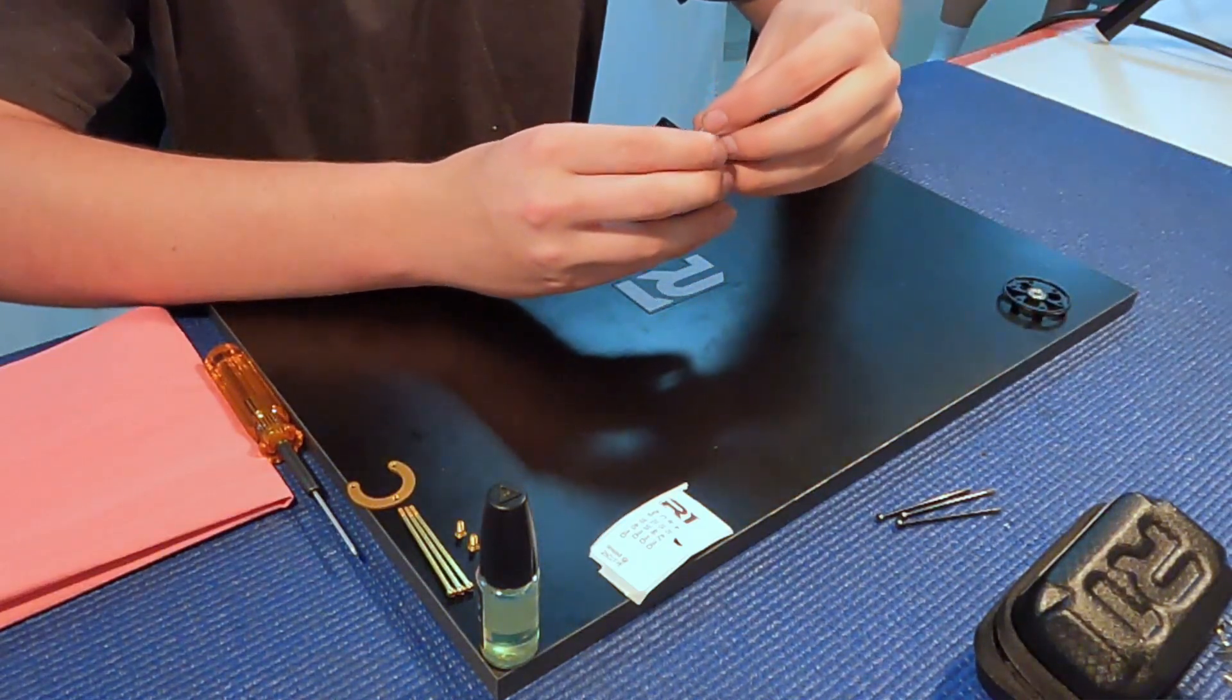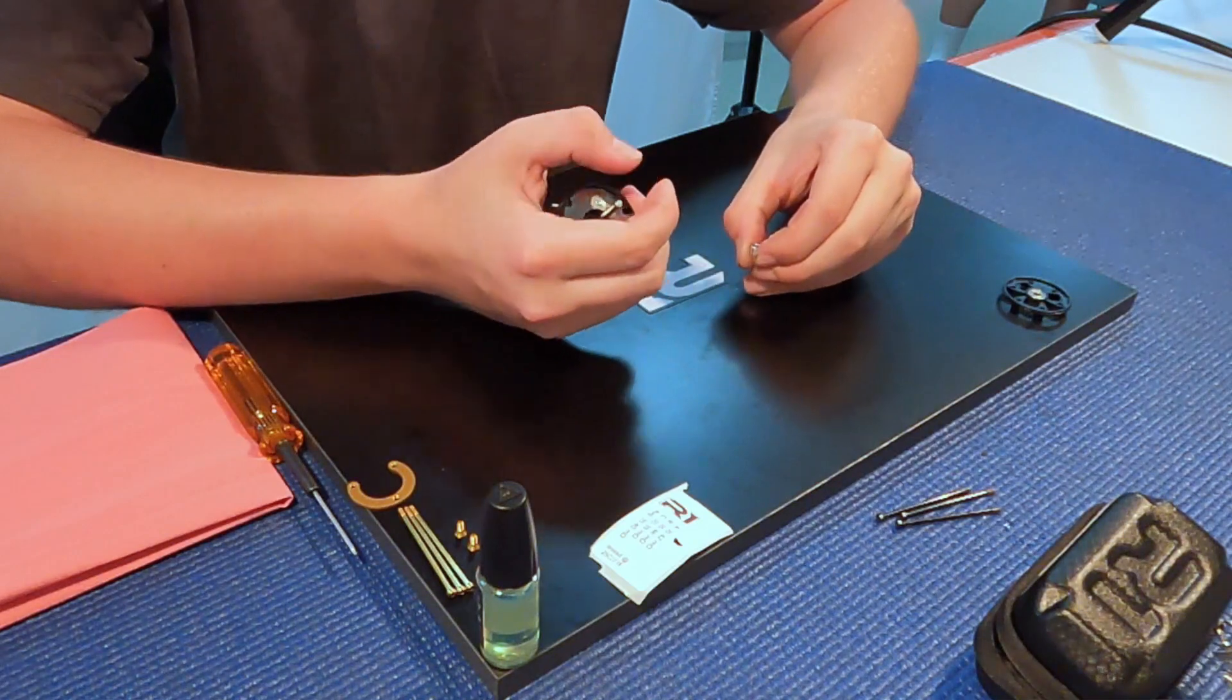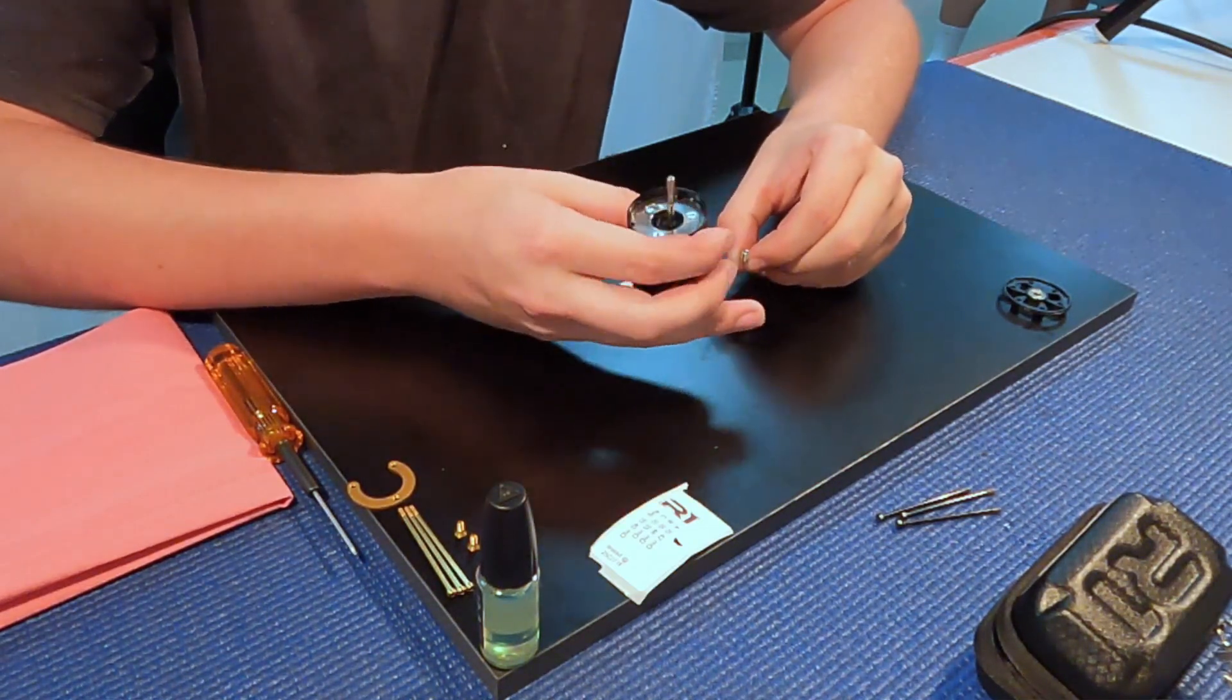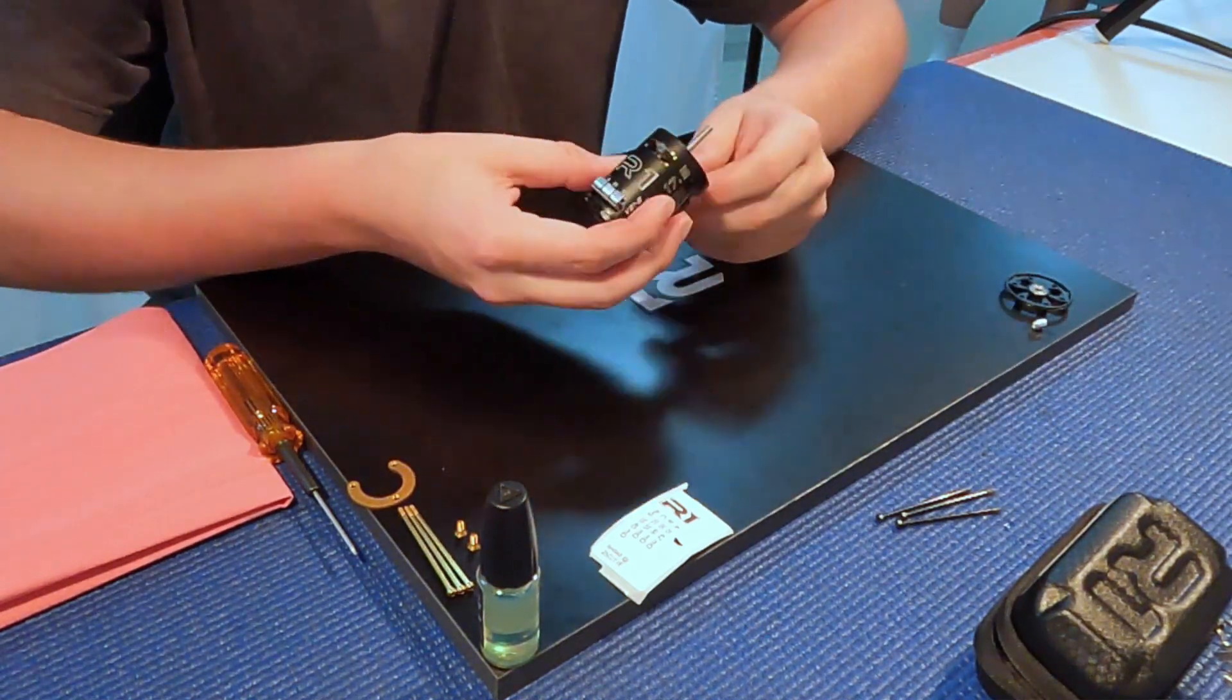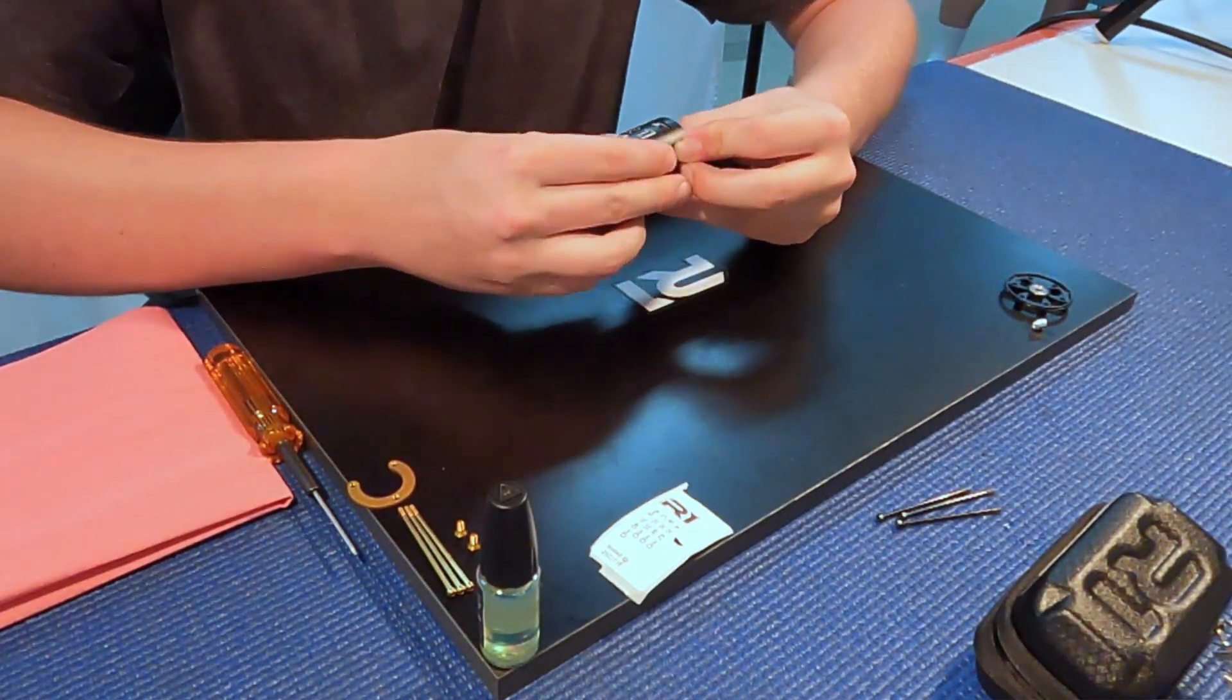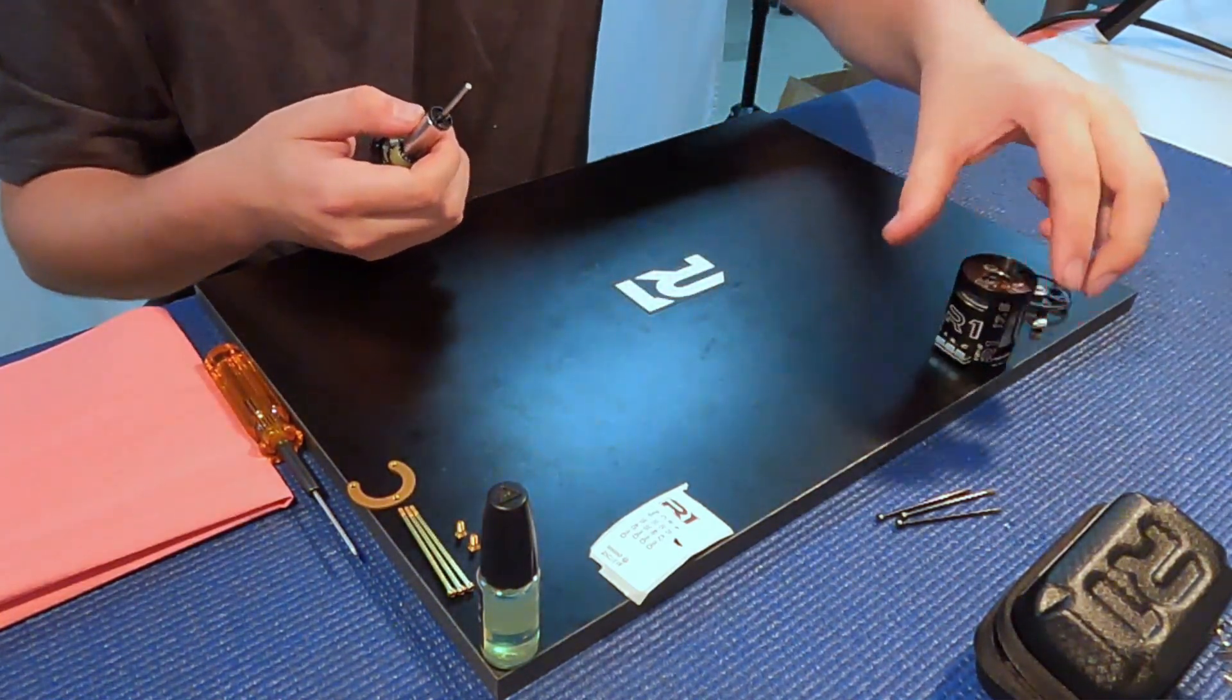Like this over here, and then sometimes there will be some 0.1 or 0.2 shims. This really depends on each motor, so make sure you don't lose those. I'll set this over there. Then to get the rotor out, I'll just push it through and grab on the back side. Comes right out.